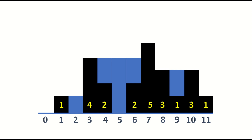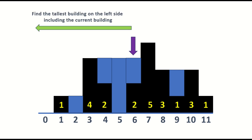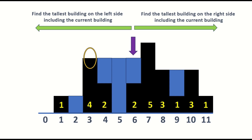Let's take a sample example and pick a random building — say, the building standing at index 6 having a height of 2. How many units of water is getting trapped on this building? That's where the logic begins. We'll try to find the tallest building on the left side, including the current building, which turns out to be the building at index 3 having a height of 4. Similarly, we'll find the tallest building on the right side, including the current building, which is the building at index 7 having a height of 5.